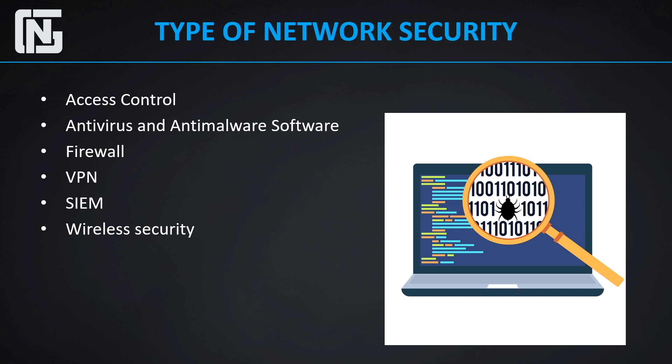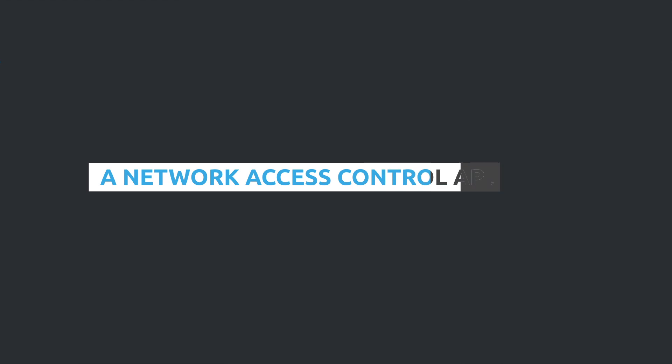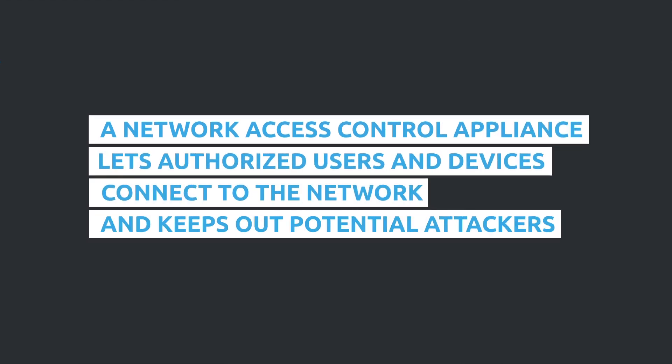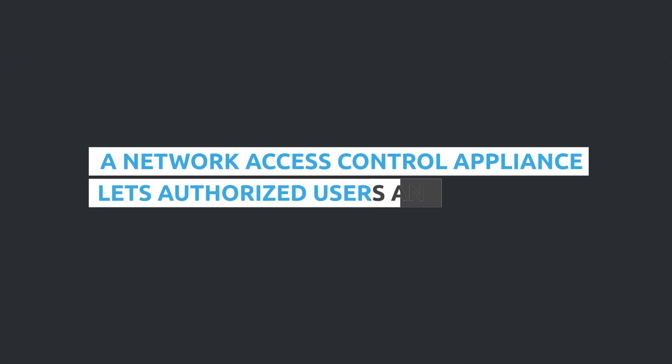There are multiple types through which we can implement network security. Starting with network access control: a network access control appliance lets authorized users and devices connect to the network and keeps out potential attackers. Administrators need to recognize each user and each authorized device, so enforcement through policies can be applied based on their level of access.